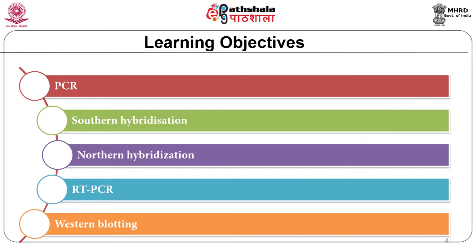Transformation of plant cells or tissues is carried out using different methods, the most popular being Agrobacterium-mediated or biolistic transfer. Putative transgenic plants are identified using appropriate selection media, and plants are regenerated and transformation confirmed by screening transformants for expression of screenable markers. However, additional methods are required to study the presence and copy number of the transgene and to study its transcriptional and translational expression.